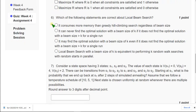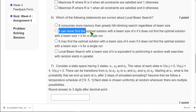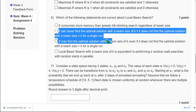Moving on to sixth question: which of the following statements are correct about local beam search? For sixth question the probable answer could be second option: it can never find the optimal solution with a beam size of K if it does not find the optimal solution with a beam size greater than K for a single run.